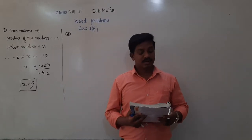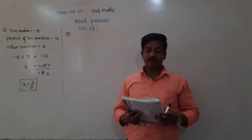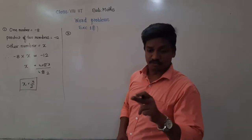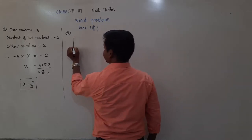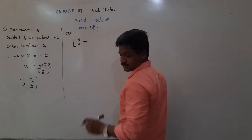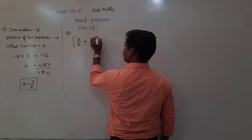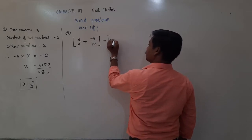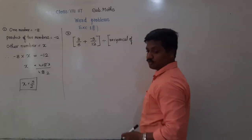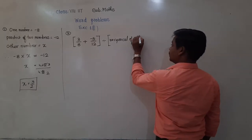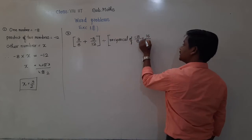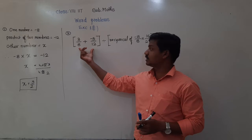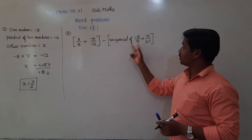Divide the sum of 3 by 8 and minus 5 upon 12 by the reciprocal of minus 15 upon 8 into 16 upon 27. This is a straightforward example. Sum means addition, so we find the sum of 3 by 8 plus minus 5 upon 12, and then divide by the reciprocal of the product of those two rational numbers.